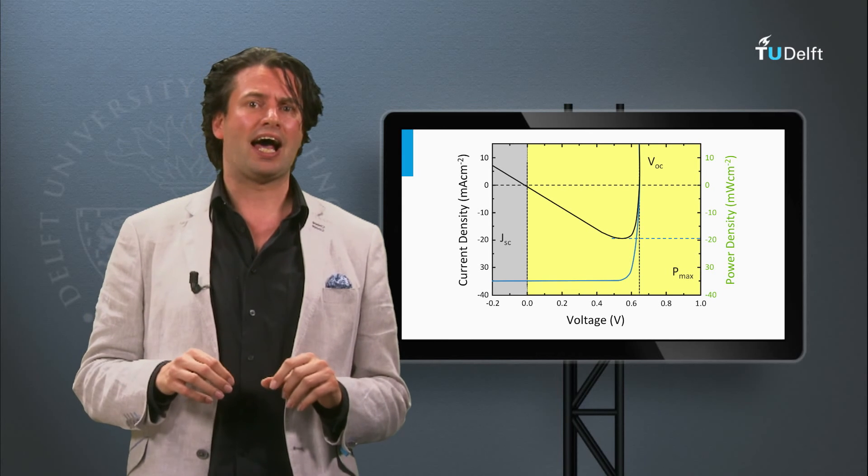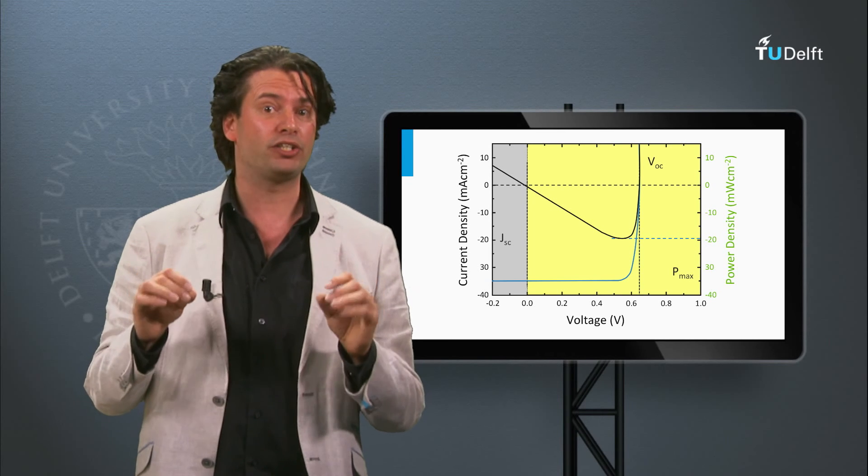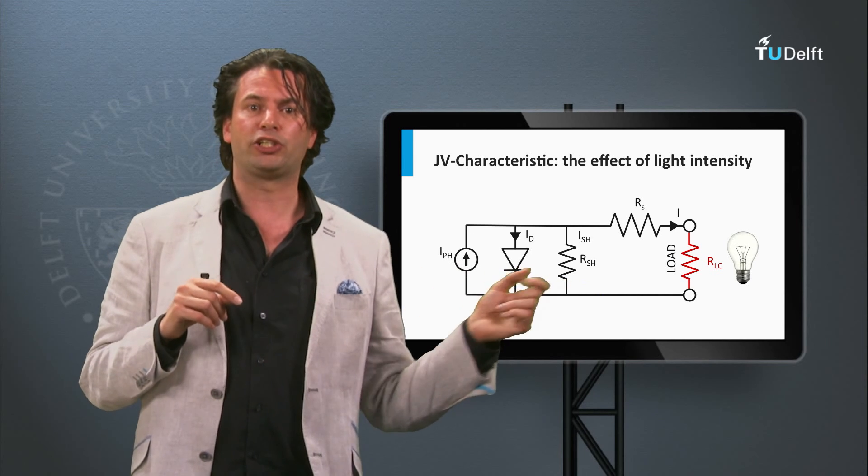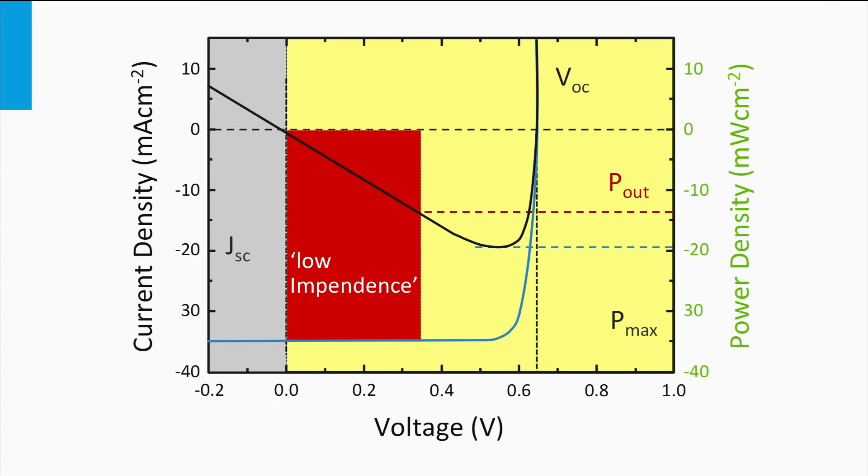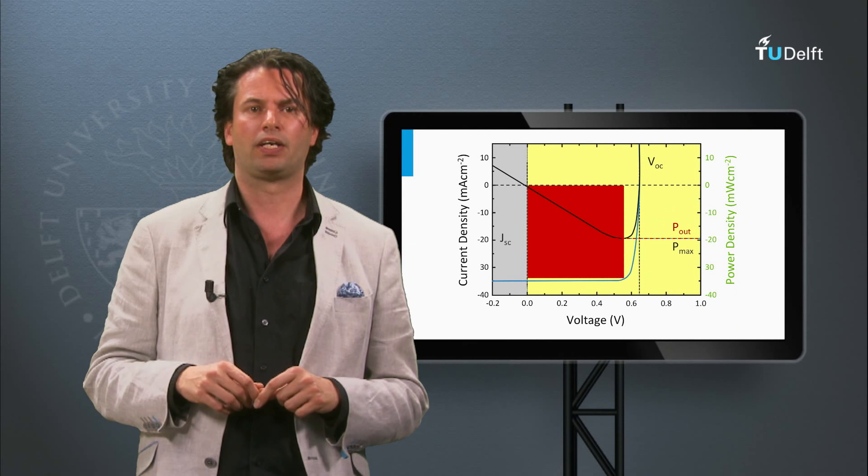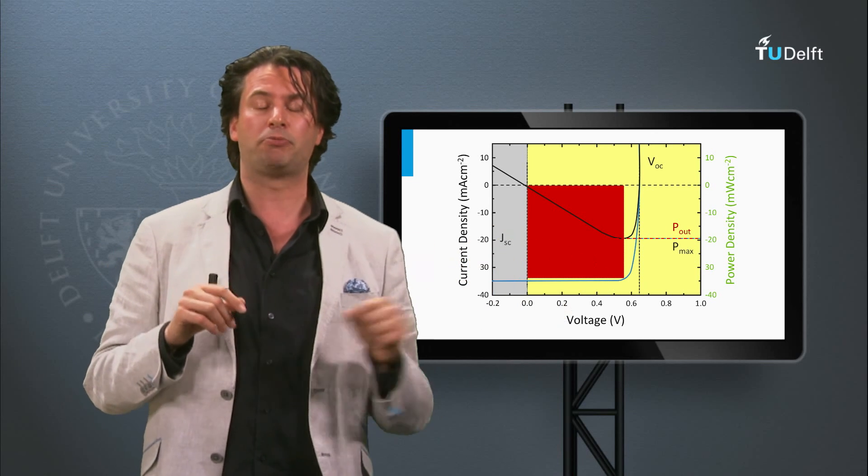The JV curve of a solar cell has a power density which is varying with voltage. What will determine at which JV point the solar cell will be operating? This is determined by the load which is connected to the solar cell. If the load has a low impedance, the current density will be high and the voltage will be low. It means that the solar cell is not operating in its maximum power point. This means that we need to tune the impedance of the load to have the solar cell working in its maximum power point.